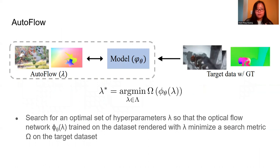Autoflow searches for an optimal set of hyperparameters so that the optical flow network trained on the dataset minimizes the search metric on the target dataset.